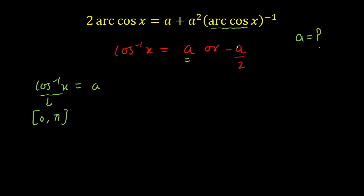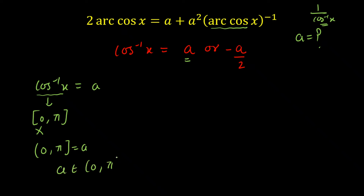The catch is: since cos⁻¹(x) appears in the denominator as 1/(cos⁻¹(x)), cos⁻¹(x) cannot be 0. So we must use an open interval at 0. The range of cos⁻¹(x) is (0, π] — open at 0, closed at π. Therefore, for Case 1 (cos⁻¹(x) = A), we get A ∈ (0, π].